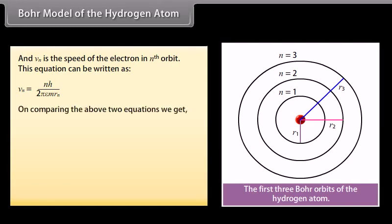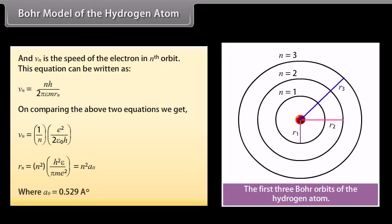On comparing the above two equations, we get the expression of velocity and radius of nth orbit. v_n = (1/n) × e²/(2ε₀h) and r_n = n² × (h²ε₀)/(πme²) which equals n²a₀, where a₀ is equal to 0.529 Angstrom.